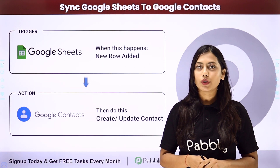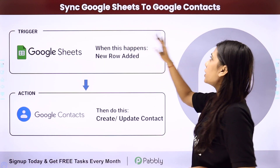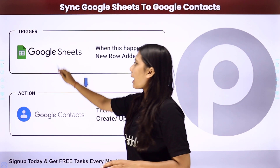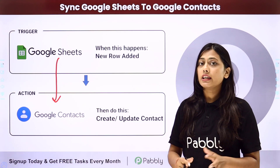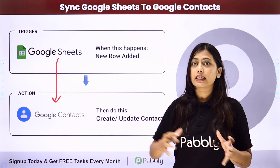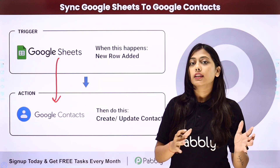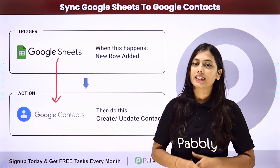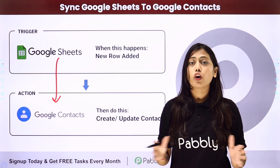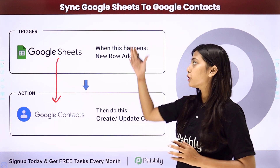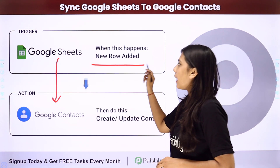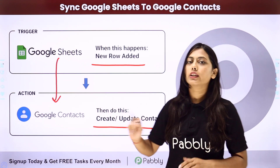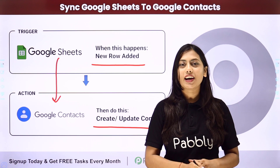Hello everyone. In this video we are going to learn how to sync Google Sheets to Google Contacts. We are going to connect both these applications so that every time a new row is added with contact details in Google Sheets, if it is an existing contact it will be updated in Google Contacts, otherwise a new contact will be created. You can create a complete automation with Pably Connect, where the trigger will be a new row added in Google Sheets and the action will be to create or update a contact in Google Contacts.